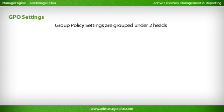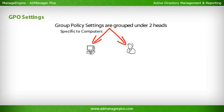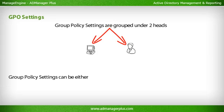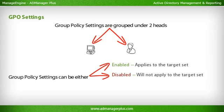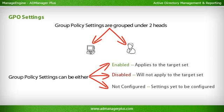GPO Settings: Group policy settings are grouped under two heads. Computer Configuration settings are specific to computers and will take effect every time a user uses the computer. User Configuration settings are specific to users and will apply to the user immaterial of the place or system that they log in from. Whenever a policy setting is edited, there are three options: Enabled — the policy will apply and settings will take effect on the target set; Disabled — the policy will not apply on the target set; Not Configured — the policy setting is undefined and will have no impact on the target set.